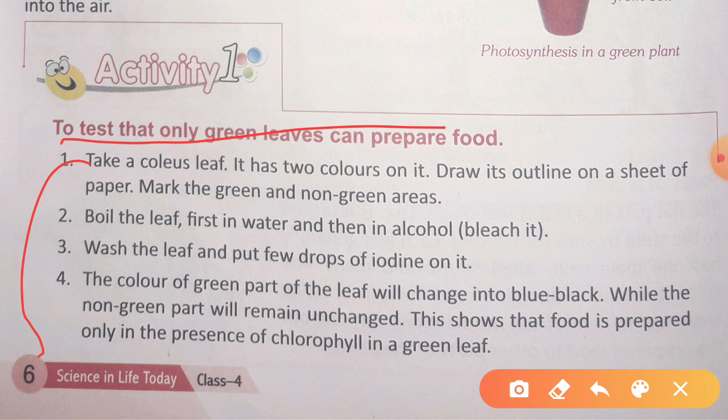So to summarize: first take the coleus leaf which has two colors, draw it on a sheet, then boil in water and then alcohol, then add iodine drops — only the green part changes to black and blue. This means food is present only in the green part where chlorophyll exists. This is the proof.